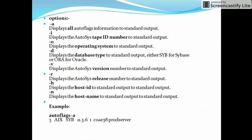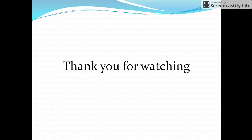The next option is -h: it will display the host ID. For each host server name, there will be one particular ID — that is the host ID. In the example, the host ID is coae38. The last option is -n, which gives the host name of the autosys server. Hope this is useful for you friends, thanks for watching.